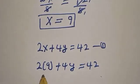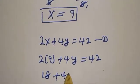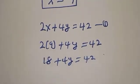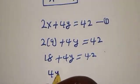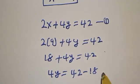Then 2 times 9 is 18, so 18 plus 4y equals 42. Then 4y equals 42 minus 18.